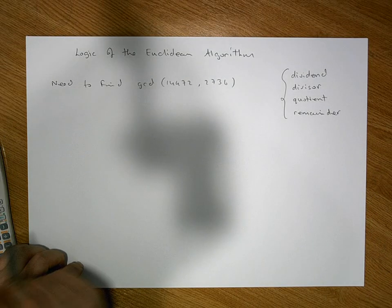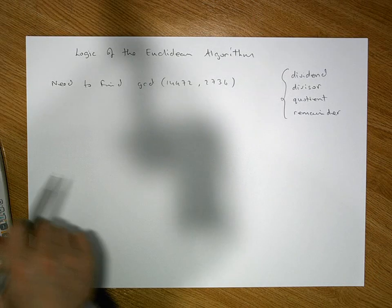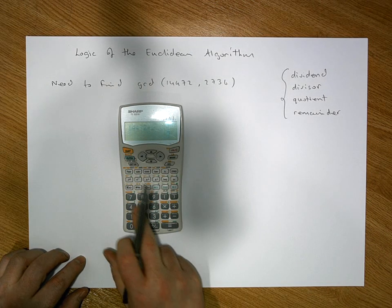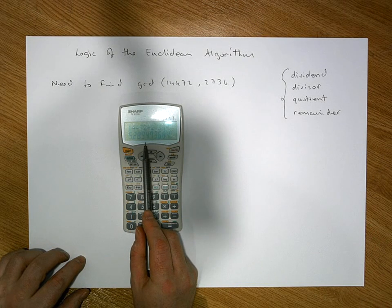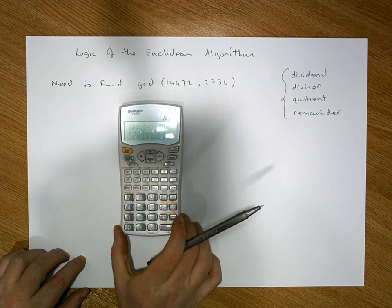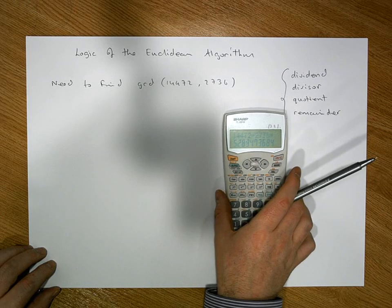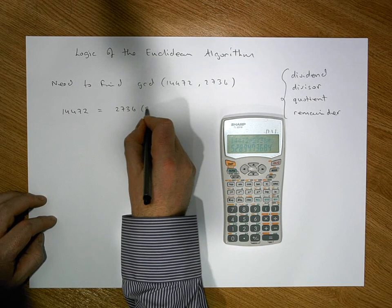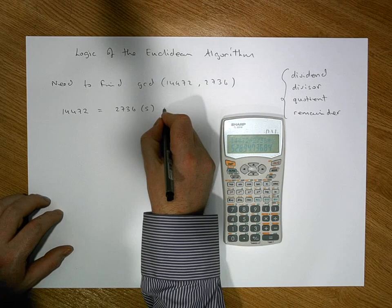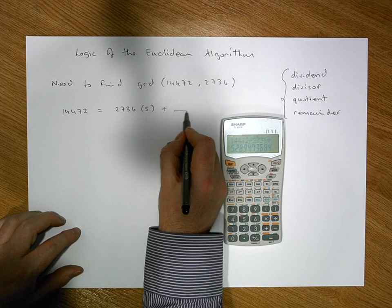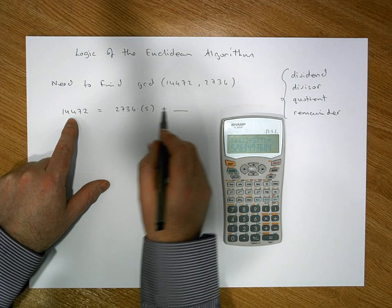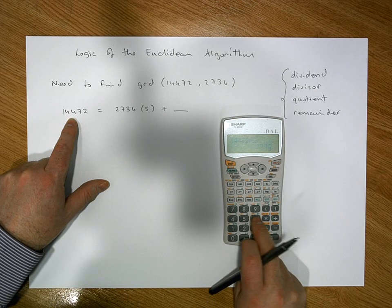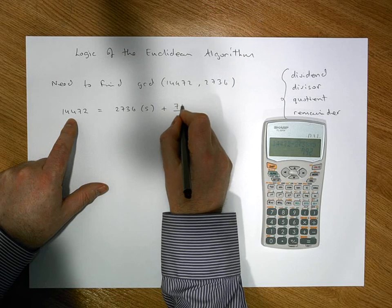We take the larger number and ask how many times does the smaller number divide into it. The larger number is 14472. When we divide it by 2736, it goes in 5 full times. So we know that 14472 must equal 2736 times 5 plus some remainder. The remainder must be equal to 14472 minus 5 times 2736, which gives us a remainder of 792.